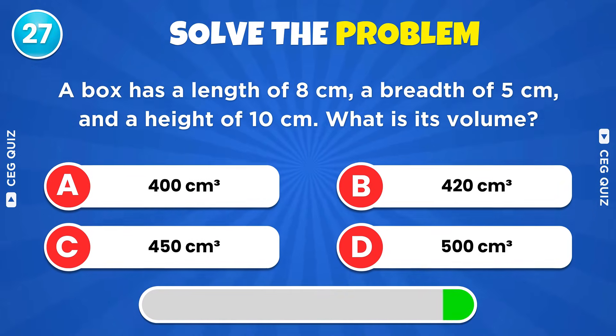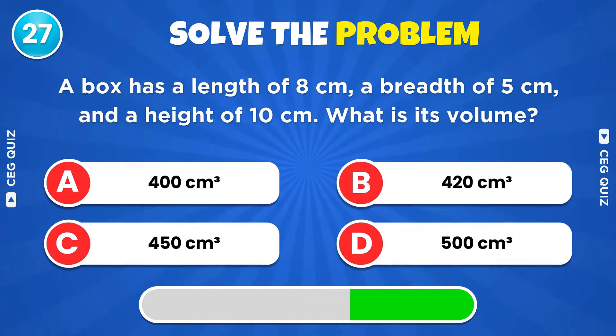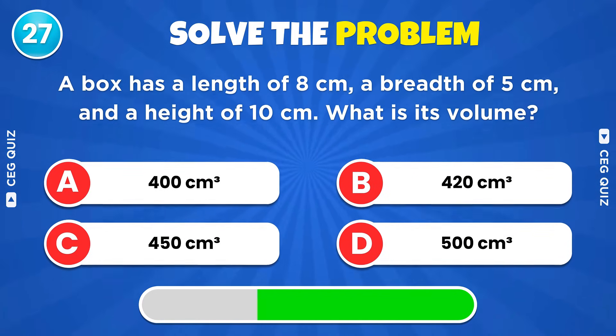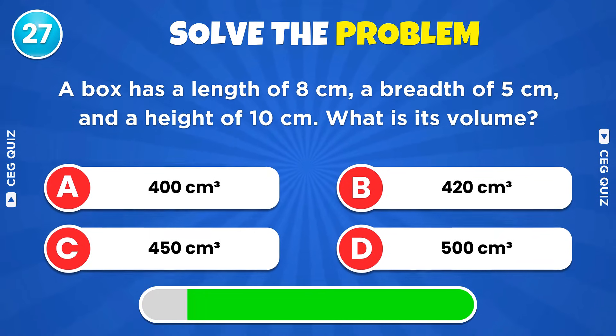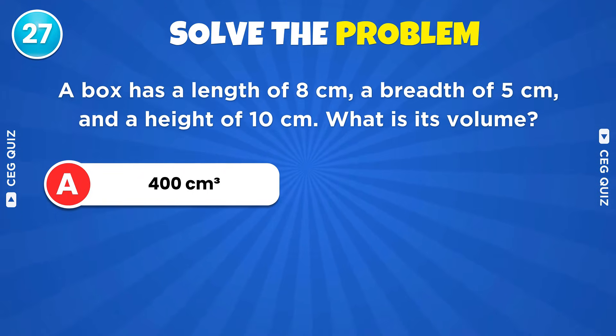A box has a length of 8 centimeters, a breadth of 5 centimeters, and a height of 10 centimeters. What is its volume? 400 cubic centimeters.